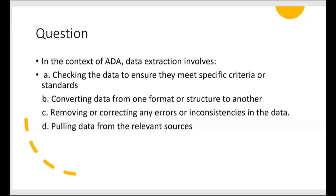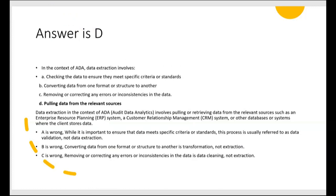B — converting data from one format or structure to another — that's also about preparation, so don't pick B. C — removing or correcting any errors or inconsistencies — that's cleaning the data. So A, B, and C are all about data preparation, but the question is asking about extraction. D — pulling data from the relevant sources — there we go. The answer is D. Extraction involves pulling or retrieving data from relevant sources such as the ERP system or a customer relationship management system. A is data validation, B is transformation, and C is data cleaning — not extraction.